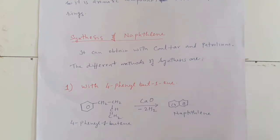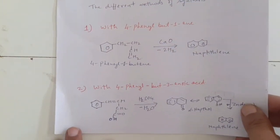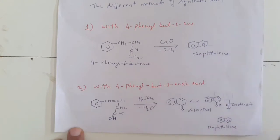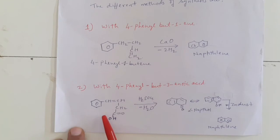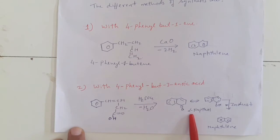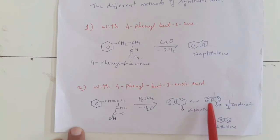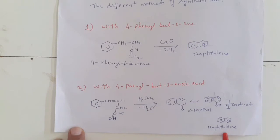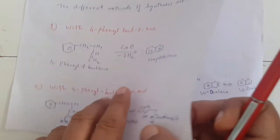The other method is with 4-phenyl but-3-anoic acid. When reacted with sulphuric acid, it removes a water molecule and we get alpha-naphthol. This is an isomer of alpha-naphthol. The alpha-naphthol, when heated with zinc dust, gives naphthalene and zinc oxide is also obtained.